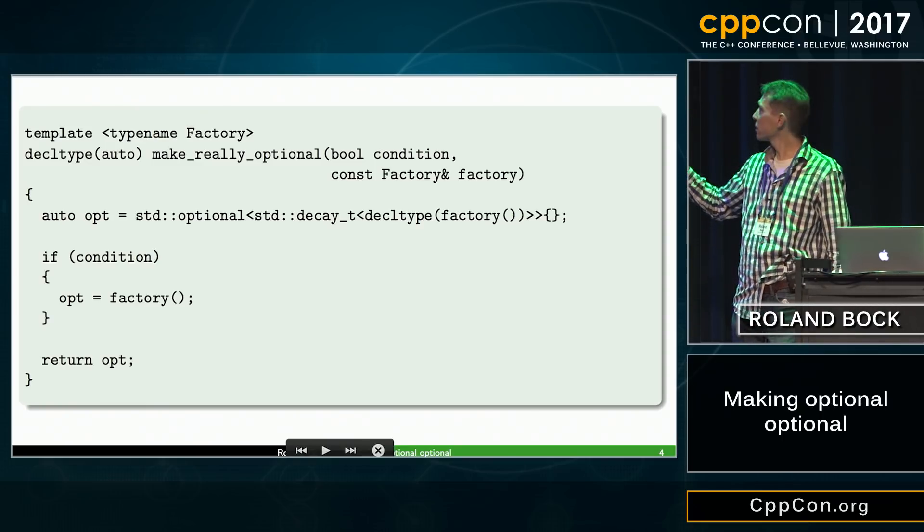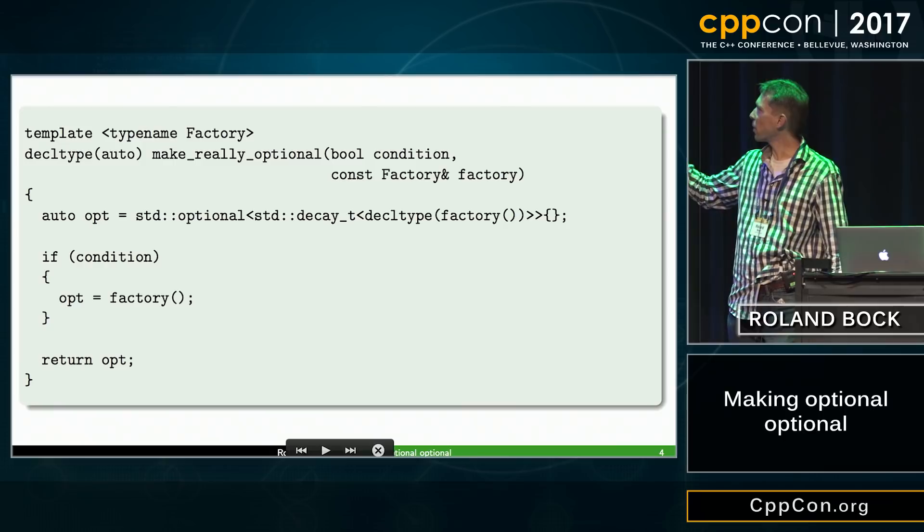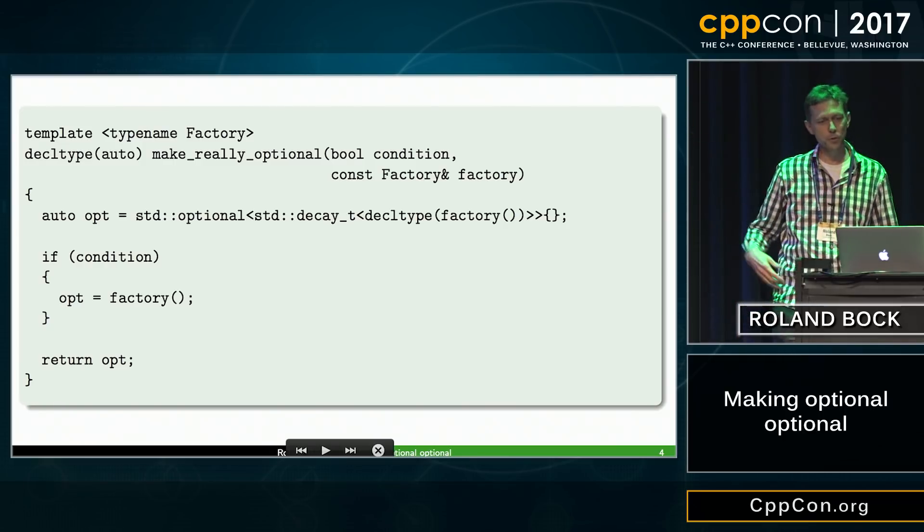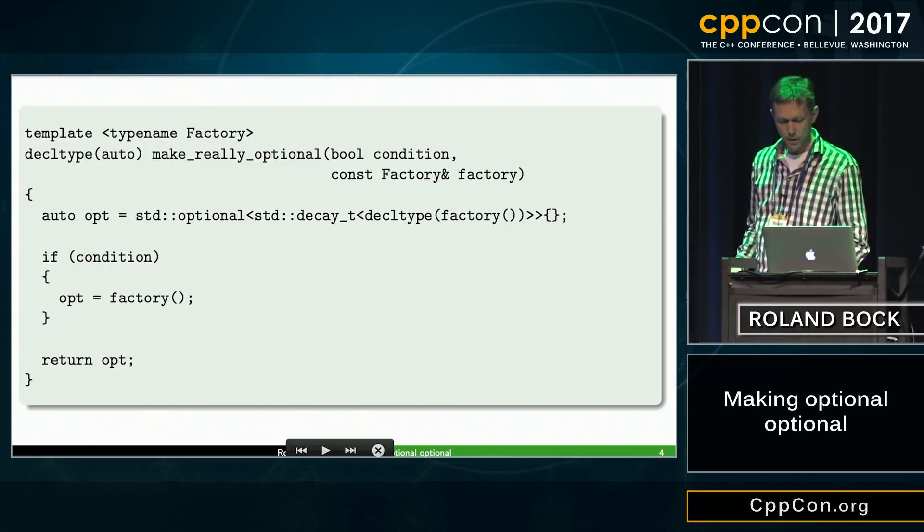We construct the default constructor for optional. Then if the condition is true, then we call the factory function, return the thing, and then we're done.